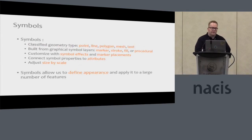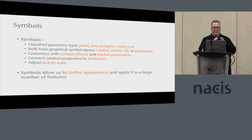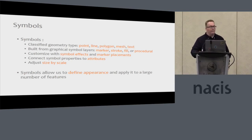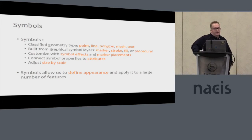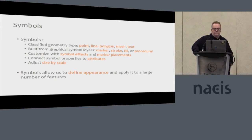When we talk about symbols in ArcGIS Pro, we're primarily talking about symbols that are classified by geometry type: points, lines, polygon, mesh for some of our 3D usage, and text. These are built from symbol layers — marker, stroke, fill — and procedural would be a specialized 3D type. You can customize these symbols with symbol effects and marker placements, which we'll talk about quite a bit in this talk.